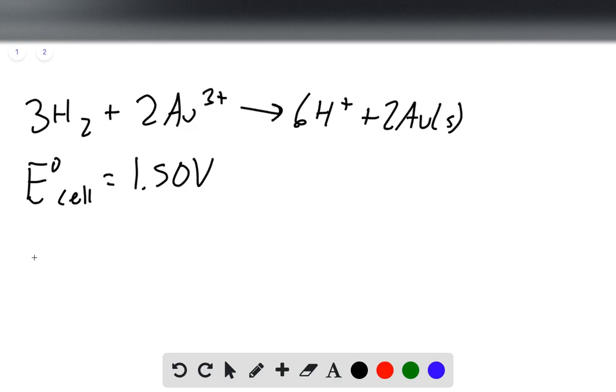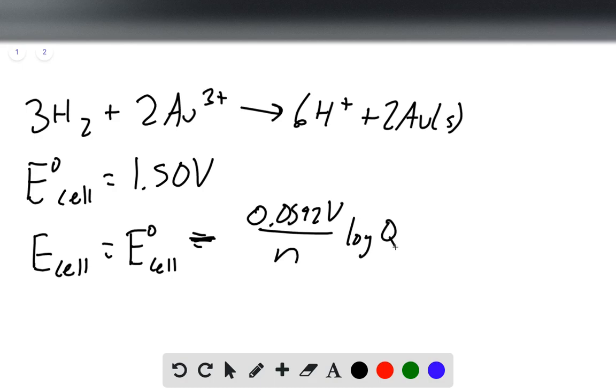And now we'll need to use the Nernst equation. So Ecell under non-standard conditions equals E°cell minus 0.0592 volts over n log of Q.